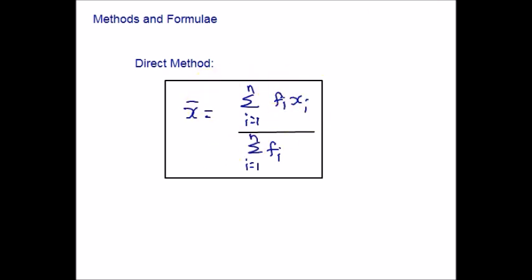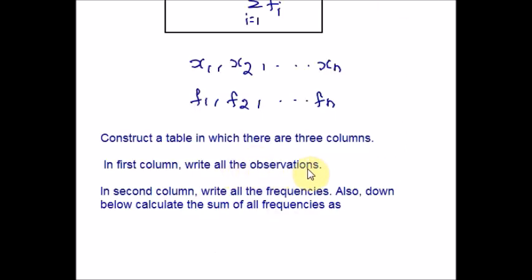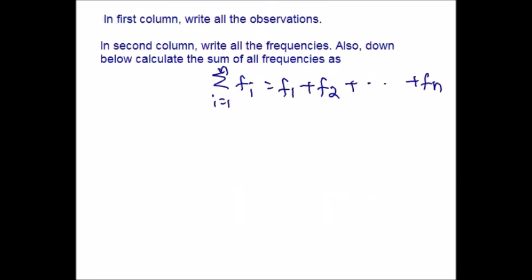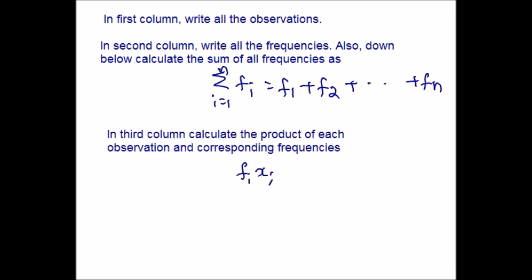Let us suppose the given observations are x1, x2 to xn, and the frequencies be f1 to fn. To calculate mean by this method, follow these steps. Step 1: Construct a table with 3 columns. Step 2: In the first column write all the observations, in the second column write all the frequencies and calculate their sum below — that is the summation sign in the formula. Step 3: In the third column calculate the product of each observation and its corresponding frequency, then find the summation of that column too. Finally, divide the summation of fixi by the summation of fi to get the required mean.